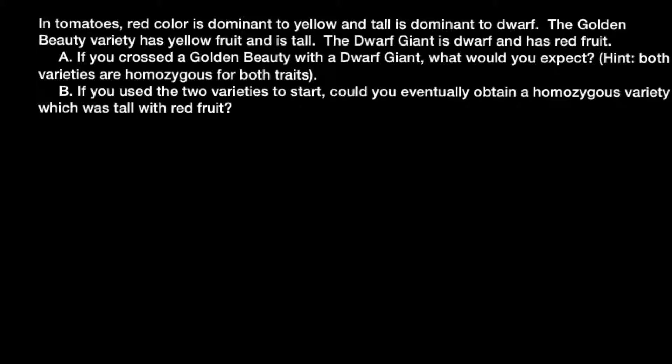Here's the problem. In tomatoes, red color is dominant to yellow, and tall is dominant to dwarf. The Golden Beauty variety has yellow fruit and is tall. The Dwarf Giant is dwarf and has red fruit. Question A: if you crossed Golden Beauty with Dwarf Giant, what would you expect? Here is a hint: both varieties are homozygous for their traits.